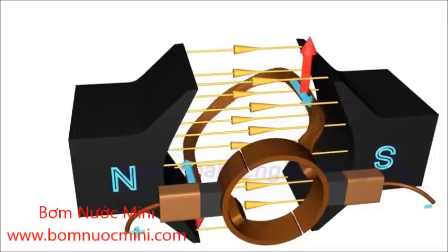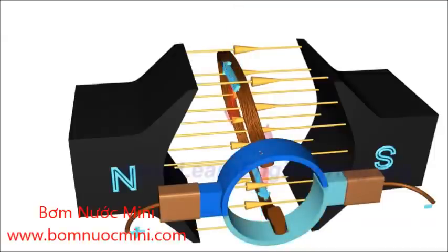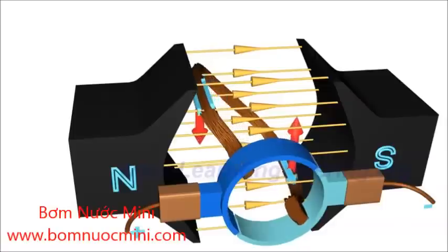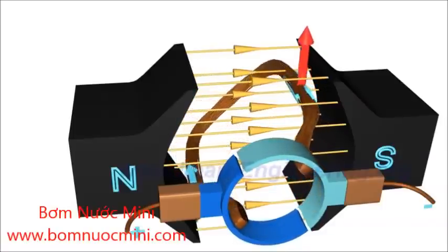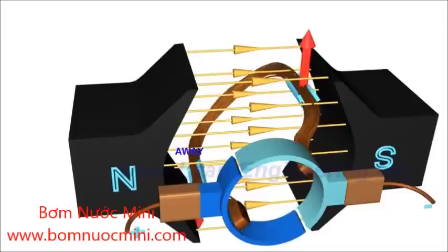You will notice that as the coil rotates, the commutator rings connect with the power source of opposite polarity. As a result, on the left side of the coil, the electricity will always flow away, and on the right side, electricity will always flow towards.